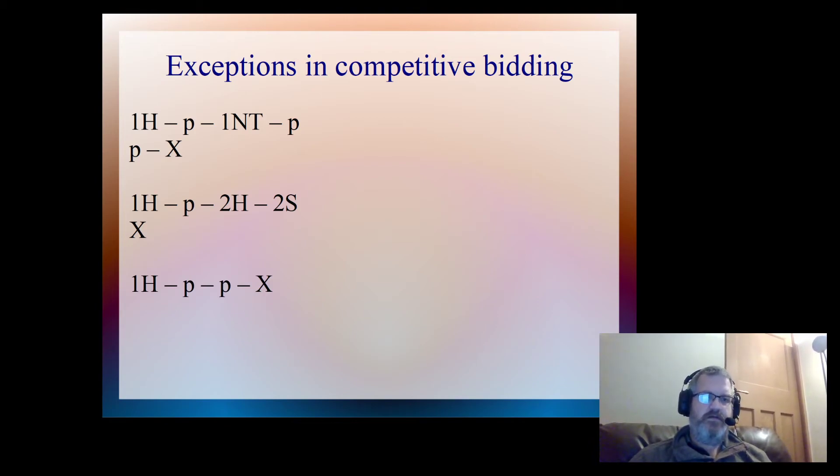So here's an example: the opposition open one heart, our partner passes, the opposition pass, and then we double. So here we're in that balancing seat again, and so whilst the double is going to be a takeout double, the meanings may be slightly skewed. So for example, we might not have four spades here even though normally if we double a major we'll have four of the other major. We may only have three spades, four four in the minors, doubleton heart, something like that. So we do want partners to bid, or partner might pass if they're sat with five or six hearts and a reasonable hand. They just didn't have an overcall to make. We're quite happy for them to pass and convert this into a penalty double. Just bear in mind though that it is a balancing double, so we're maybe doing this a little bit lighter than we would do in the second seat. So maybe nine or ten points there, and we might not have the four spades that we normally want to have for double of hearts.